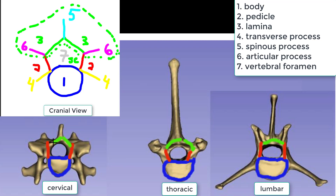Now we can see the body, pedicle, and lamina identified on each of the three vertebra types. Next we look at the transverse process, which by definition comes off laterally where the body meets the pedicle. These are the transverse processes of the lumbar, the modified transverse processes of the thoracic, and the transverse processes of the cervical vertebrae. The spinous process comes off where the two lamina meet.